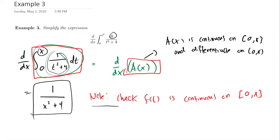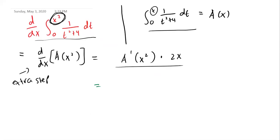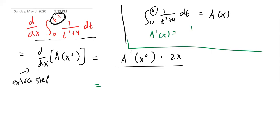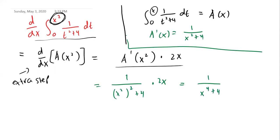By the previous part, we know that A prime of x is just 1 over x squared plus 4 — we replaced the t's with x's. So A prime of x squared means wherever you see an x, plug in x squared, giving 1 over x squared squared plus 4, which is 1 over x to the fourth plus 4. Then multiply by 2x. So 1 over x to the fourth plus 4, times 2x, simplifies to 2x over x to the fourth plus 4. And that is your answer.